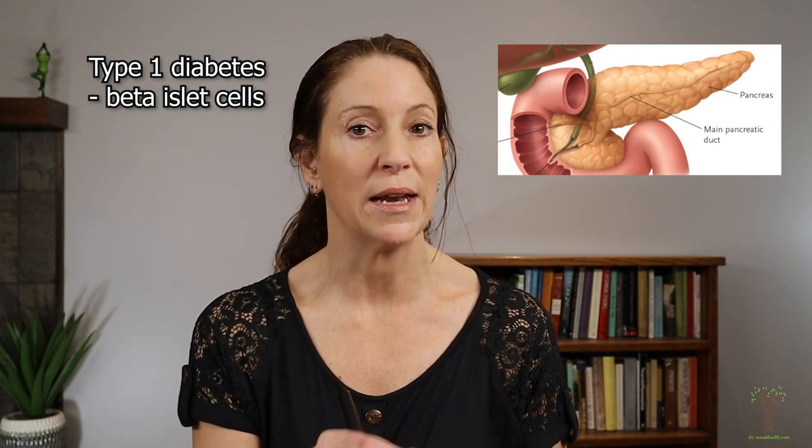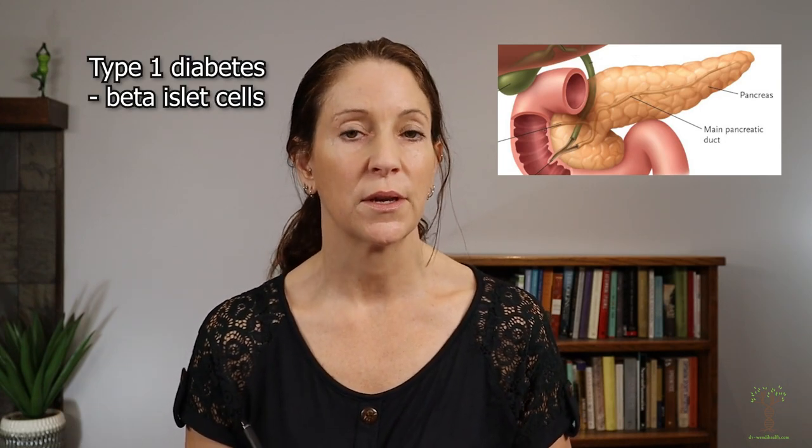With multiple sclerosis, immune cells attack the myelin sheath produced by oligodendrocytes in the central nervous system, eventually affecting sensory and motor function. Type 1 diabetes is an autoimmune disease where immune cells attack the beta islet cells in the pancreas that produce insulin.